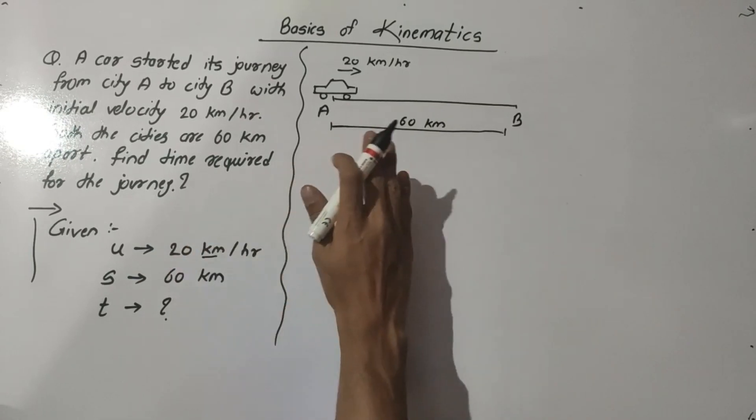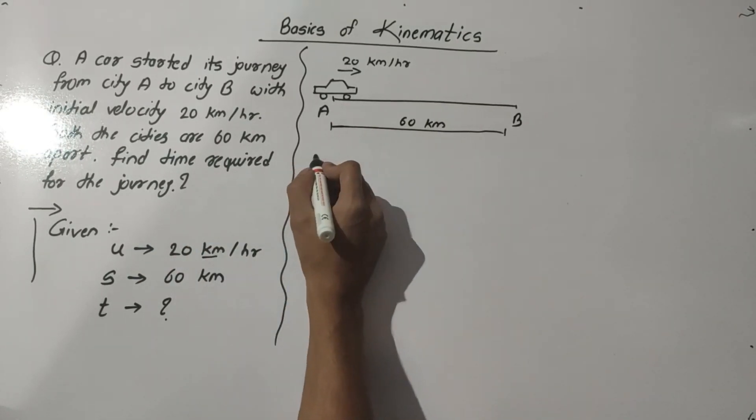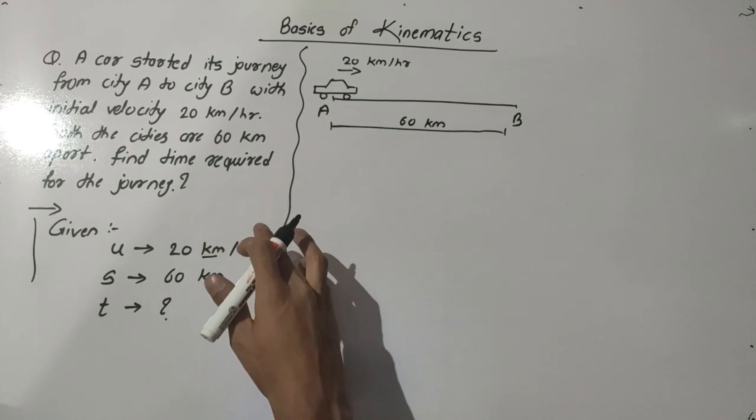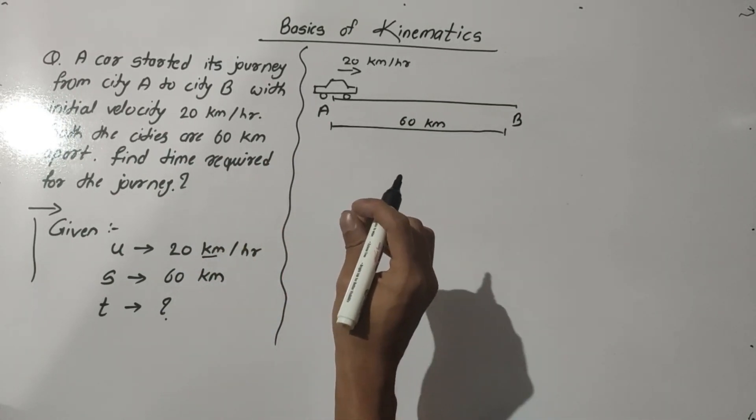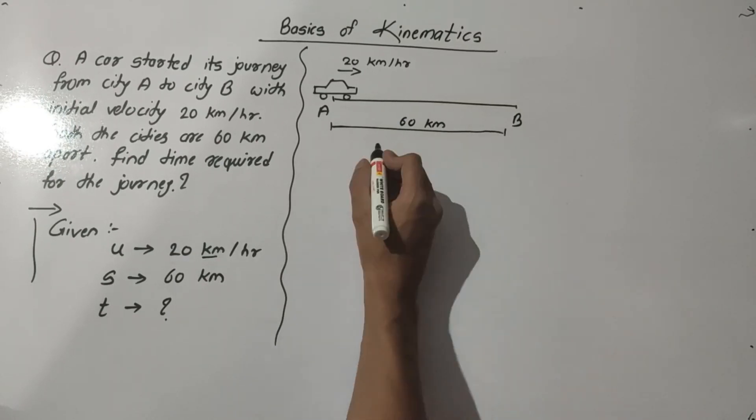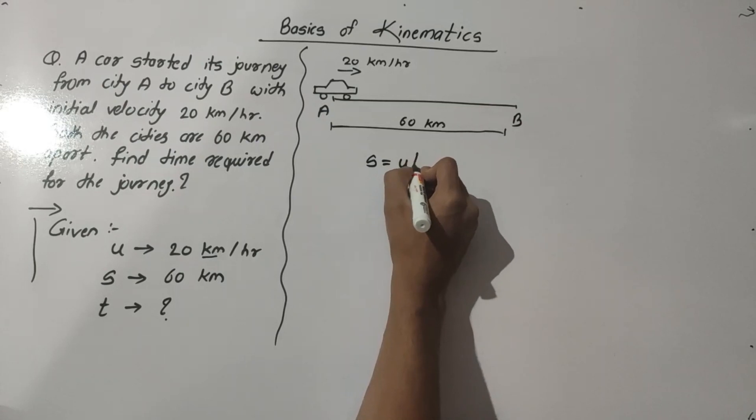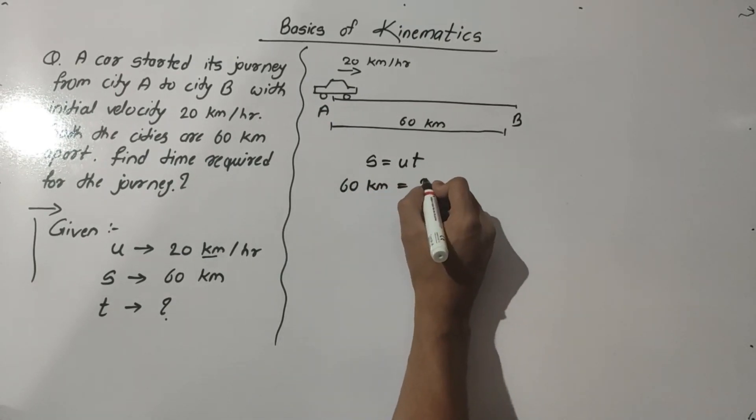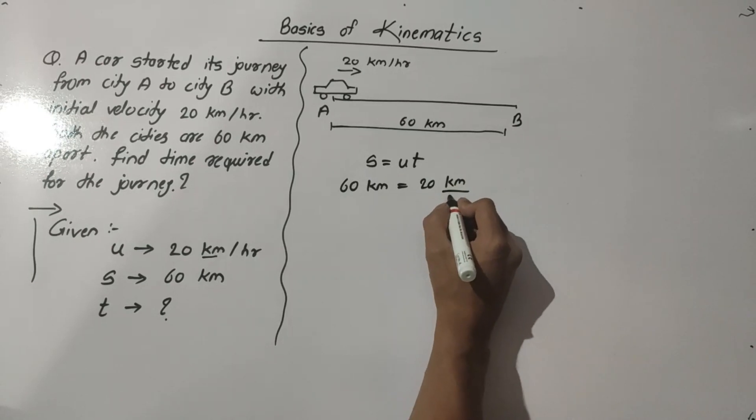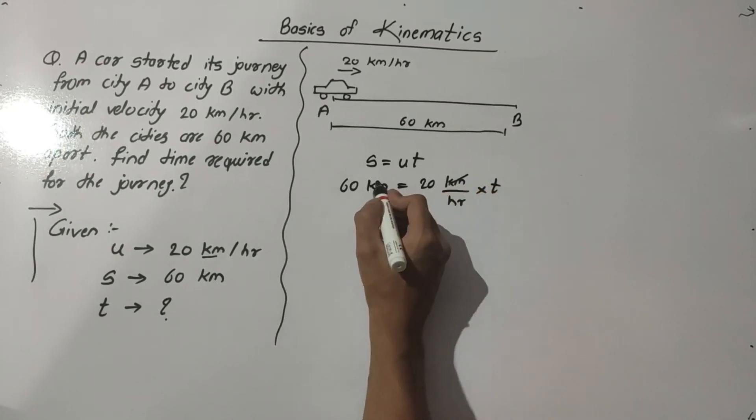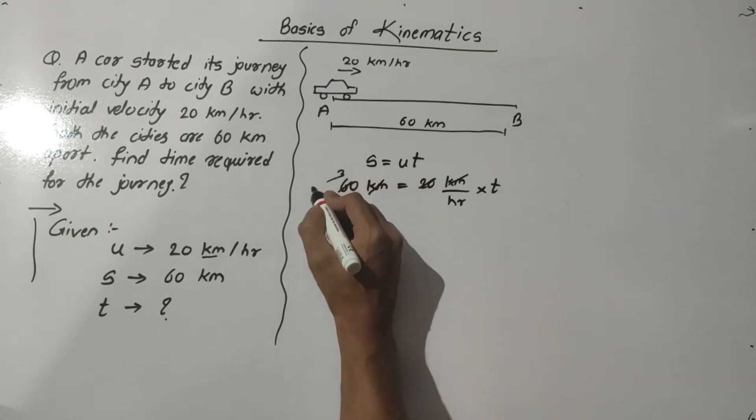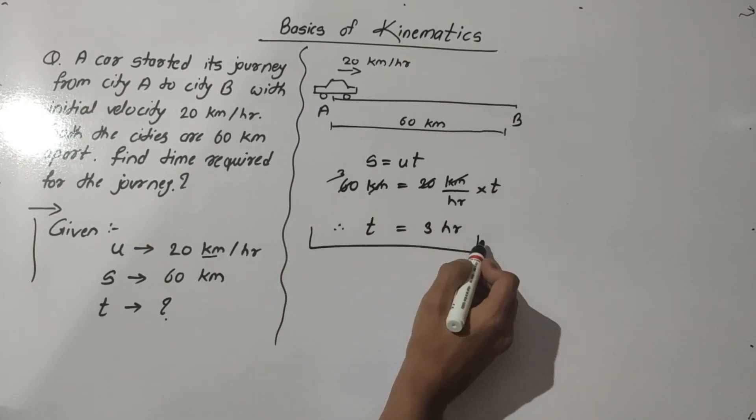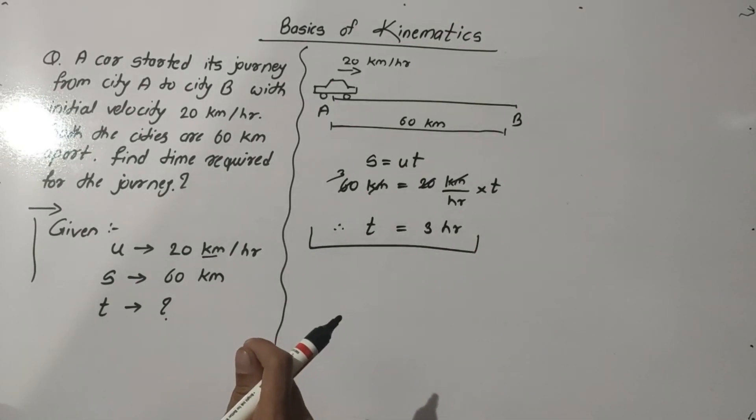Because we have simplified the problem with the help of diagram. Now we know the formula - the acceleration is constant here. If not mentioned in the question, then we assume that acceleration equals zero. And we know the formula for zero acceleration - that is, S equals UT. So put the values.